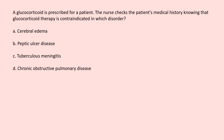A glucocorticoid is prescribed for a patient. The nurse checks the patient's medical history knowing that glucocorticoid therapy is contraindicated in which disorder? A. Cerebral edema. B. Peptic ulcer disease. C. Tuberculous meningitis. D. Chronic obstructive pulmonary disease.